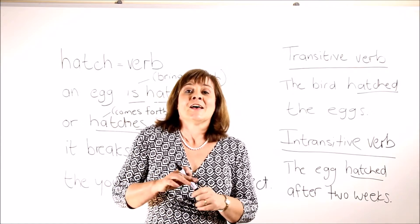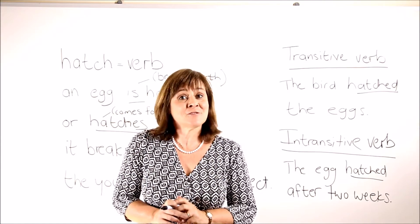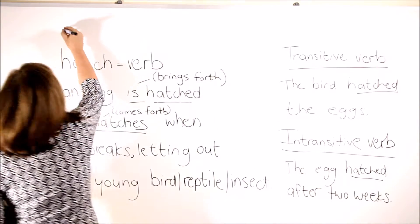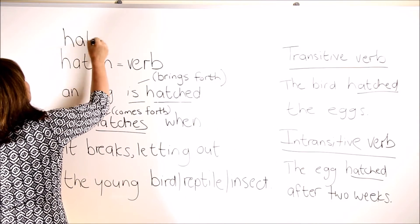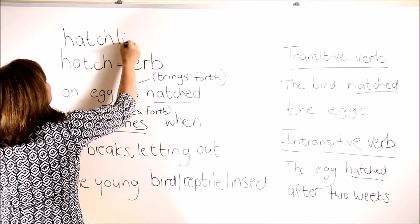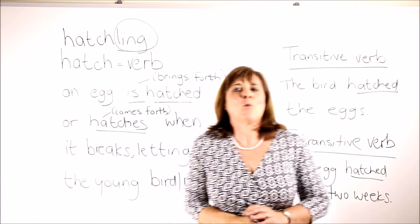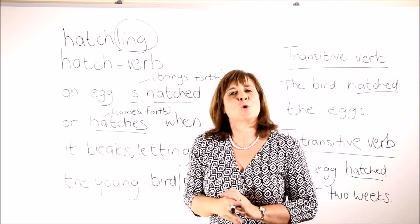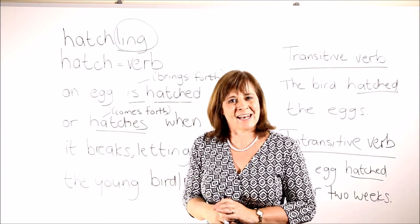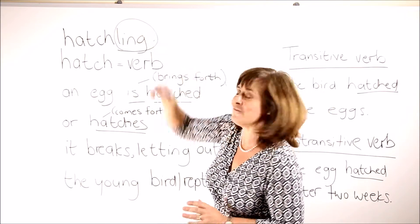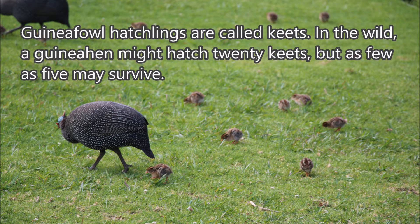A little animal that emerges from the shell, from the egg, is called a 'hatchling'. You'll often see that suffix when referring to small things, small birds, small animals — we often use the suffix '-ling'. Sample sentences: 'Guinea fowl hatchlings are called keets. In the wild, a guinea hen might hatch twenty keets, but as few as five may survive.'